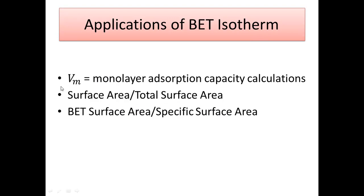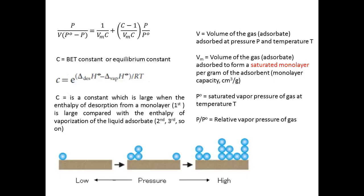All calculations about surface area and specific surface area are dependent on vm. The value of vm is obtained from the BET isotherm. First we will learn how to calculate vm, which is the monolayer adsorption capacity, and then we will use this vm to calculate the total surface area and the specific surface area.